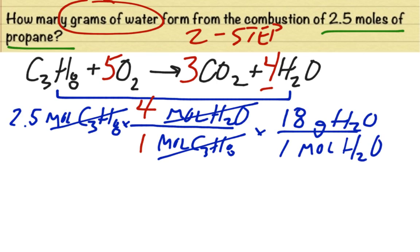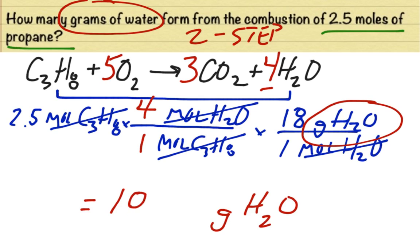Again, the units cancel, and now we're simply left with the remaining unit, grams of water. So since we now have the unit that we're looking for, we can go ahead and do our multiplication. 2.5 times 4 times 18 gives us 180 grams of H2O.